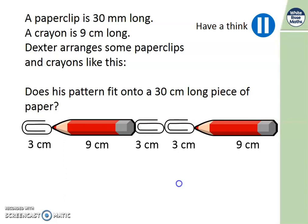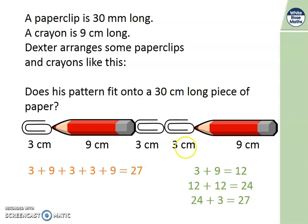Let's see how you did. You could just add them up in order. 3 add 9, add 3, add 3, add 9. Which is 27. Well done if you found the answer. What other ways could we try it? We could try by doing 3 add 9. This paperclip and this crayon makes a 12. In the pattern I notice there's another paperclip and crayon. Which will be another 12. And that's 24 altogether. Then I'm left with one more paperclip. So that 24, add the 3 more, is 27.